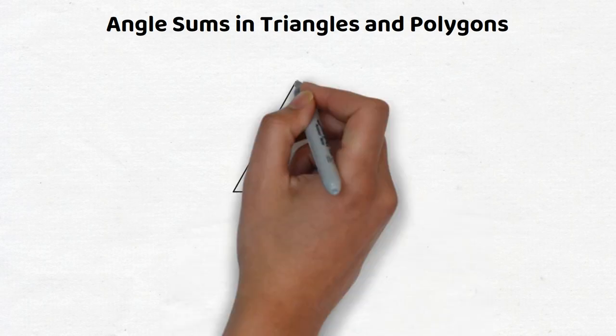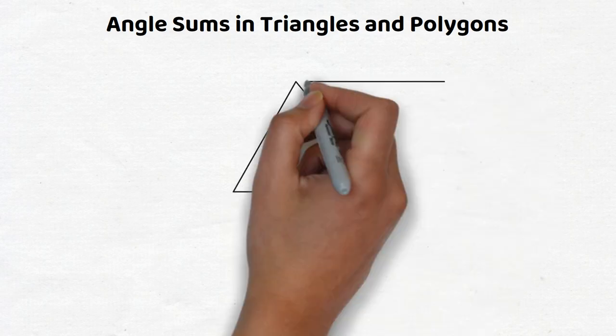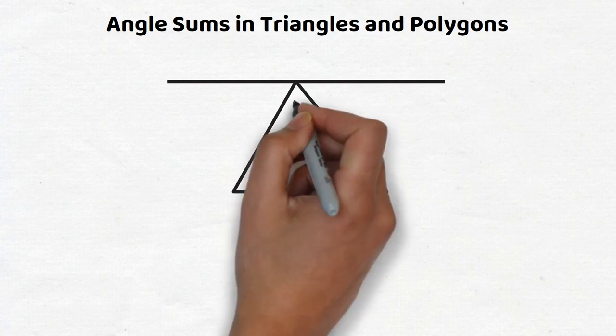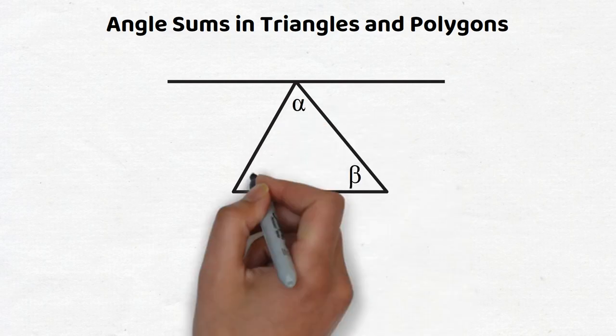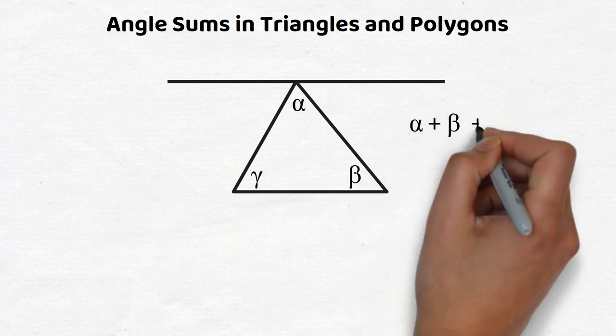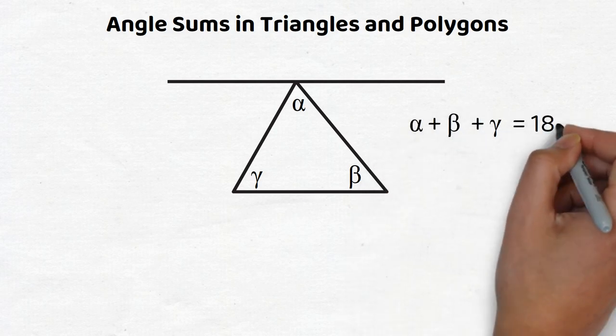Angle sums in triangles and polygons. A fundamental theorem about angles is that the sum of the angles of any triangle equal up to a straight angle, or 180 degrees. In other words, if α, β, and γ are angles of any triangle, then α + β + γ = 180.